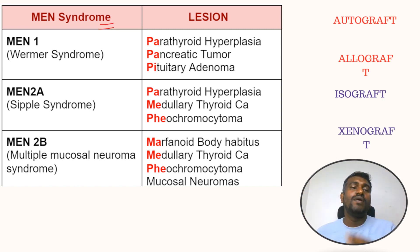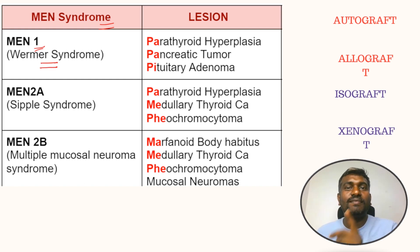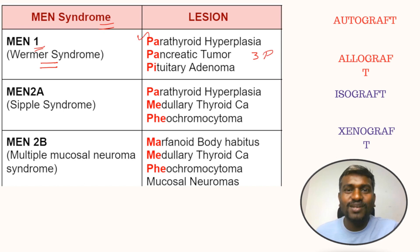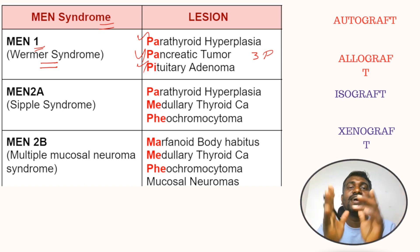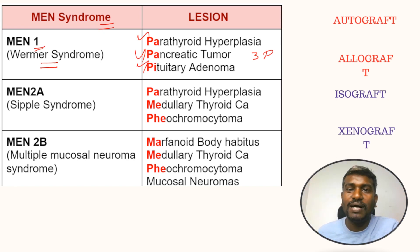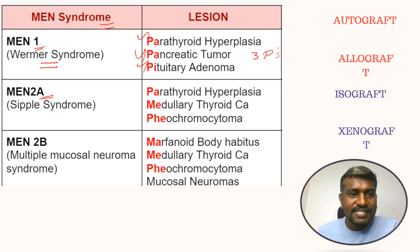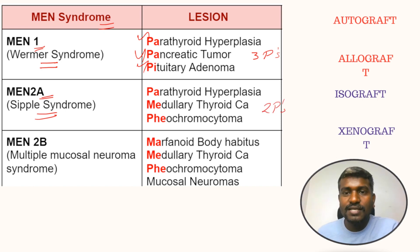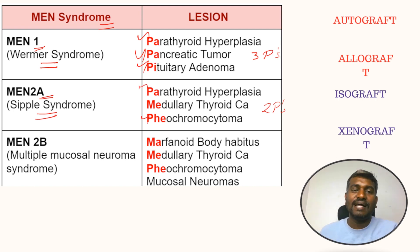MEN syndrome is always a hot topic in FMG exams. MEN 1 is called Wermer syndrome and has three P's: parathyroid hyperplasia, pancreatic tumor, and pituitary adenoma. MEN 2A is called Sipple syndrome and has two P's: pheochromocytoma and parathyroid hyperplasia, plus medullary thyroid carcinoma.